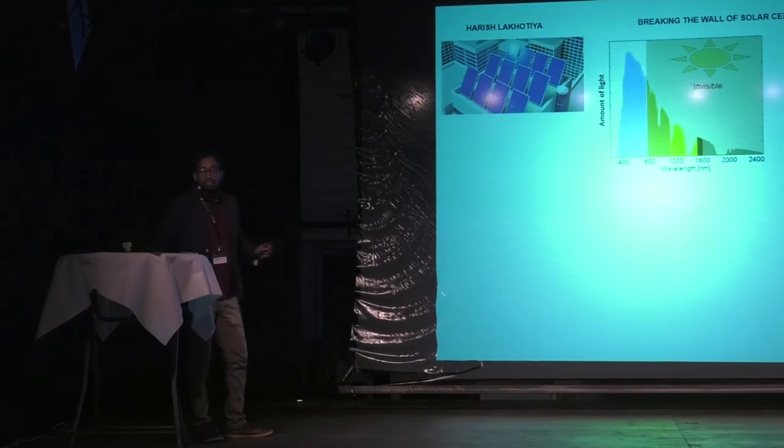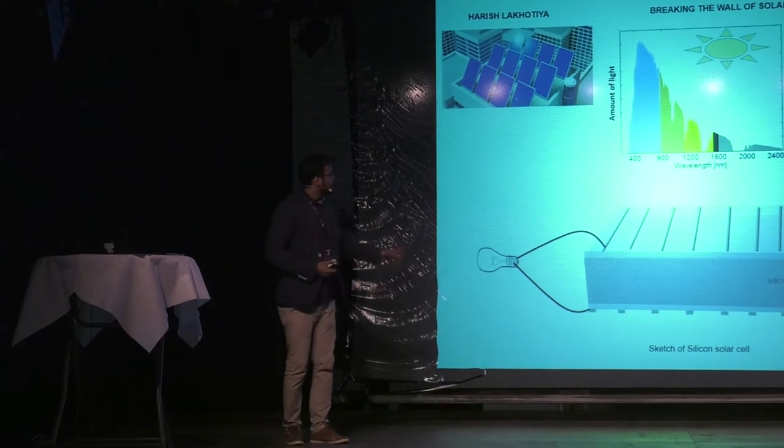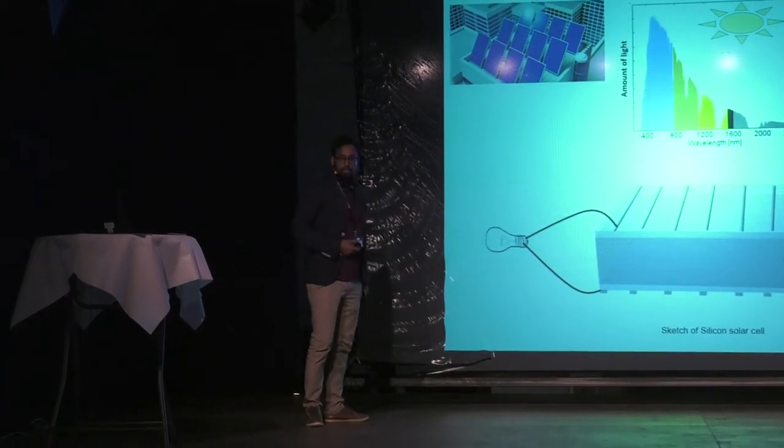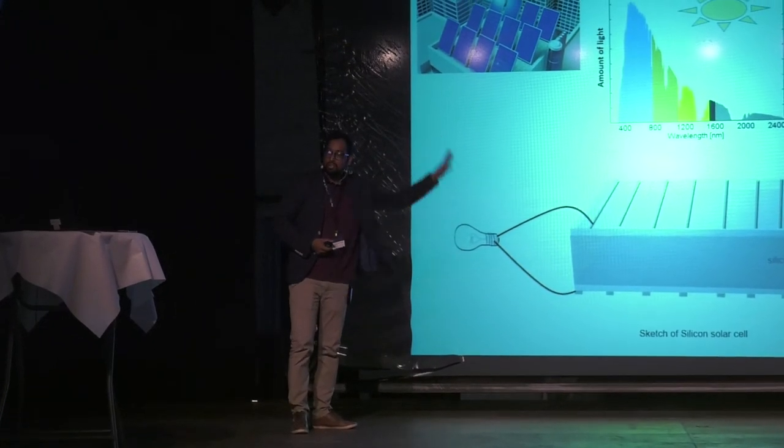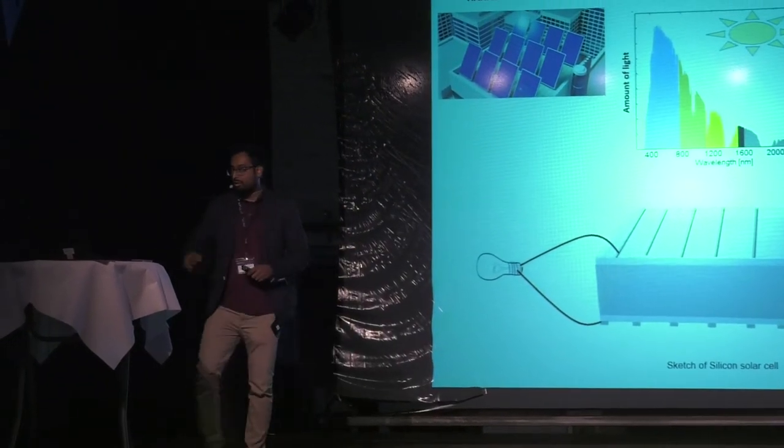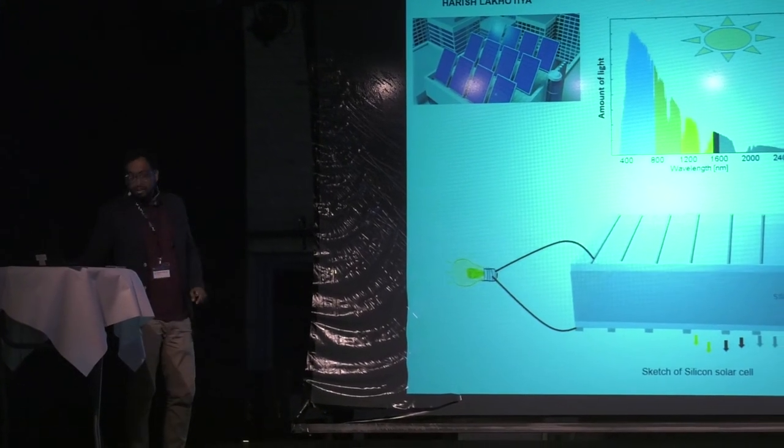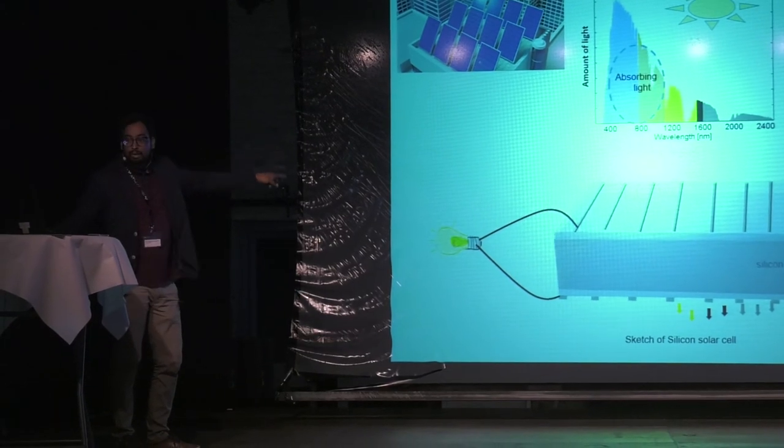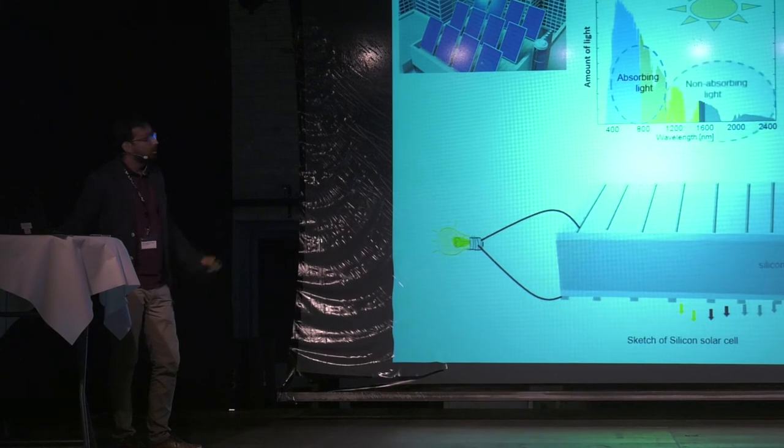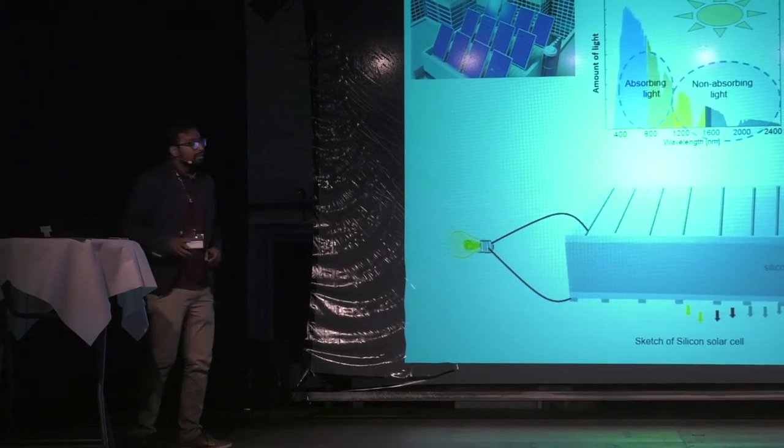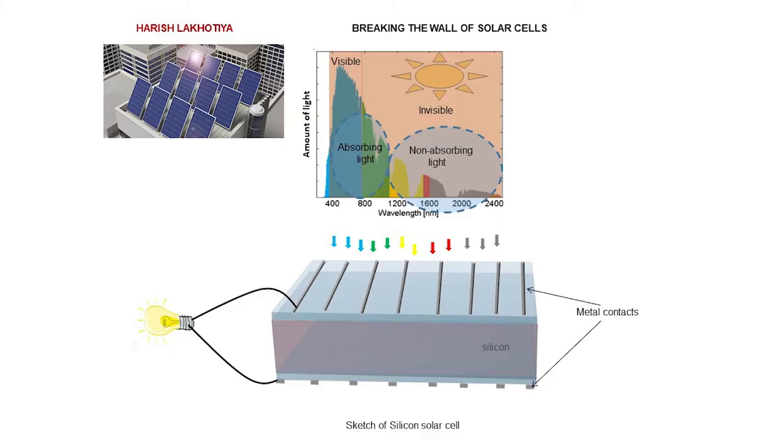So now if I take a very common solar cell which is silicon solar cell, where silicon is absorbing material, what would happen if the light comes on this material? Some part of the light would get absorbed by silicon, but some part of the light would just pass through it. Now you see that this part of the spectrum basically gets absorbed by silicon, and that produces electricity. Whereas this part of the light does not participate at all. So this is one of the limiting factors in this device efficiency. This is what I call the wall.